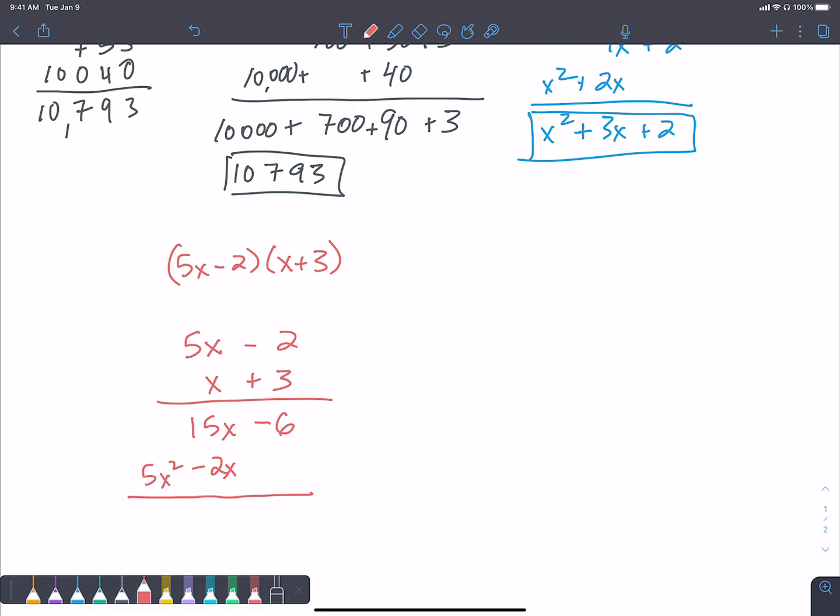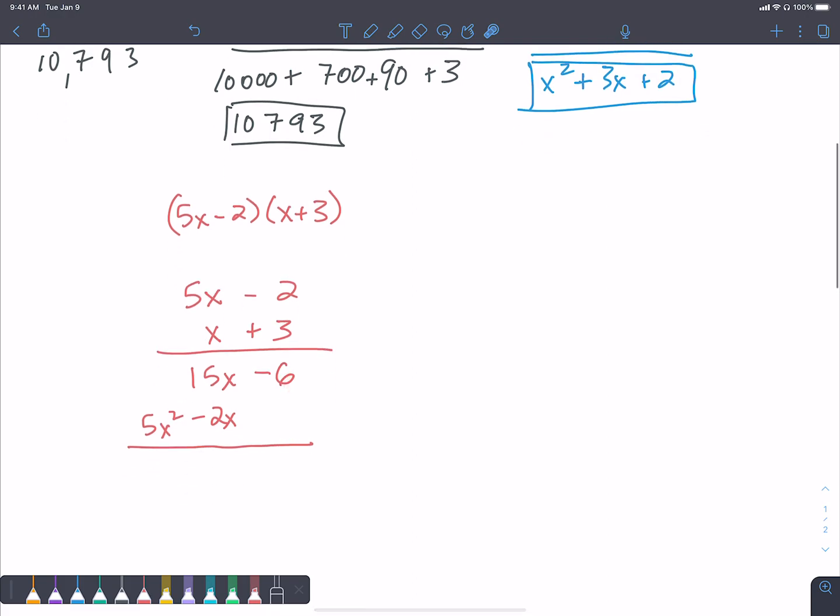So now when I add these things together, I'm going to add all of the like terms. There's nothing else in the whole number column, so I just have negative 6. Here I've got 15x minus 2x. So there's 13x, positive 13x. And then I've got 5x squared. And there is my multiplied binomial. So just another method that you can use along with the area model or the distributive property.